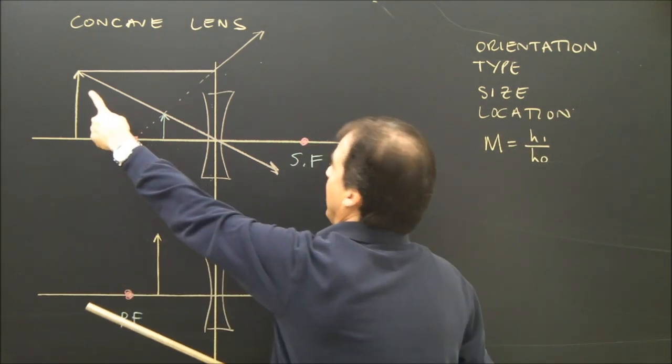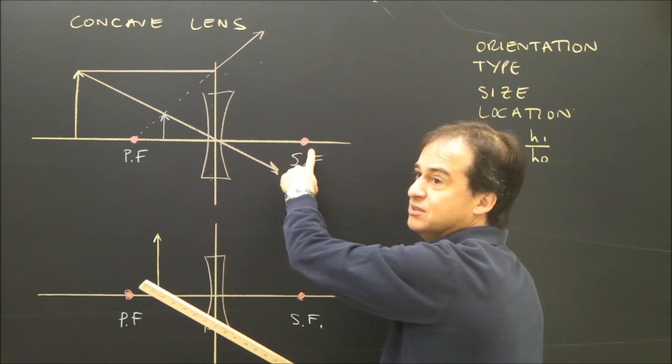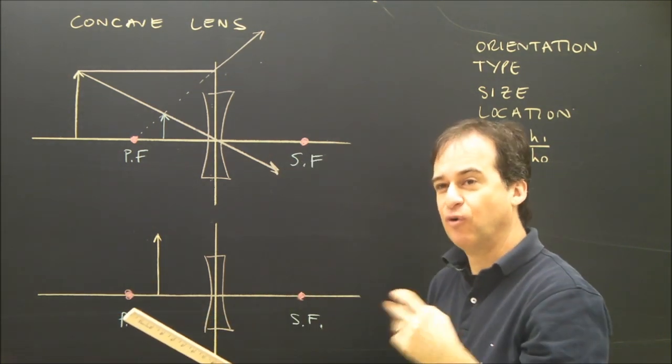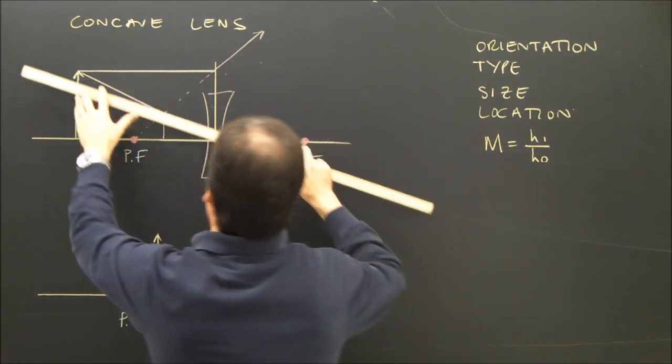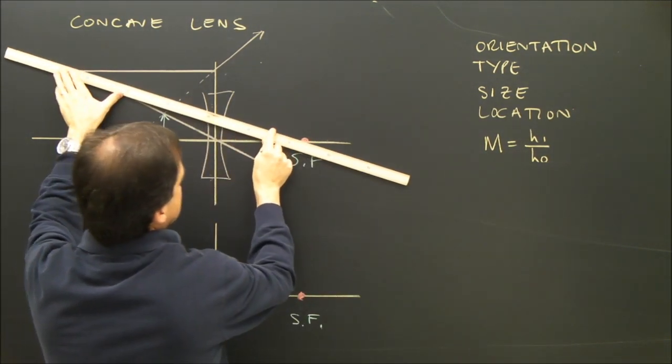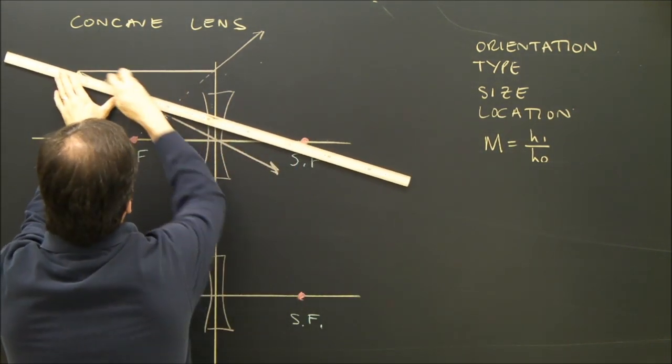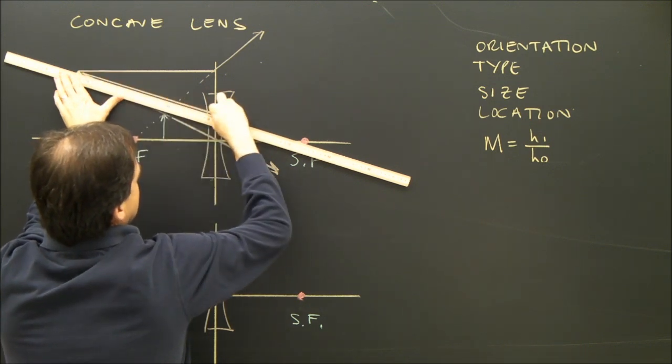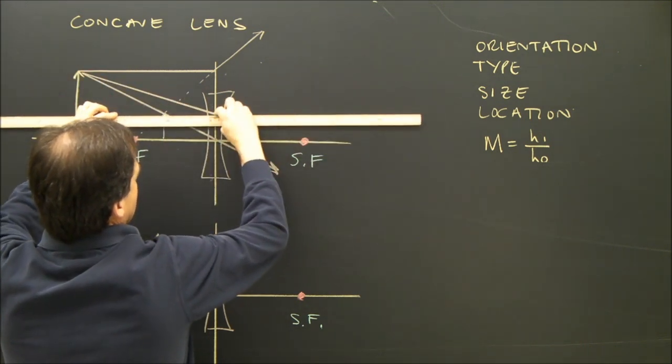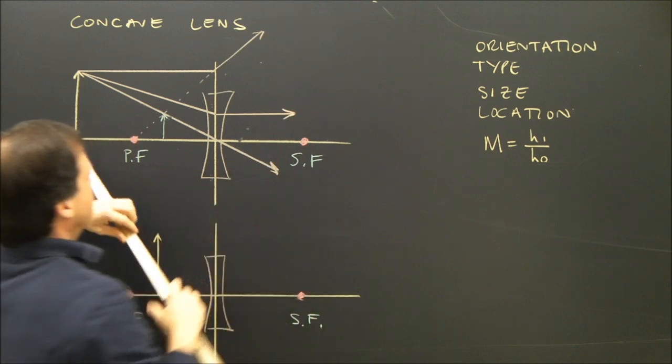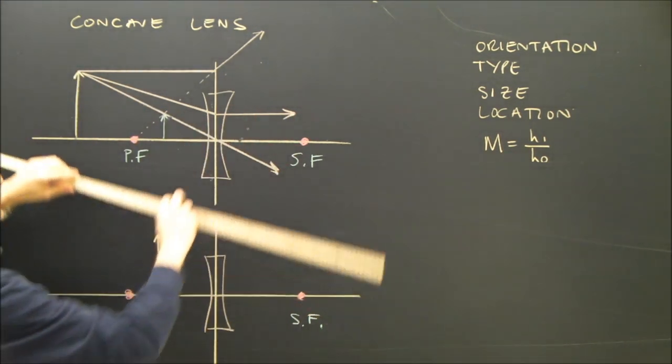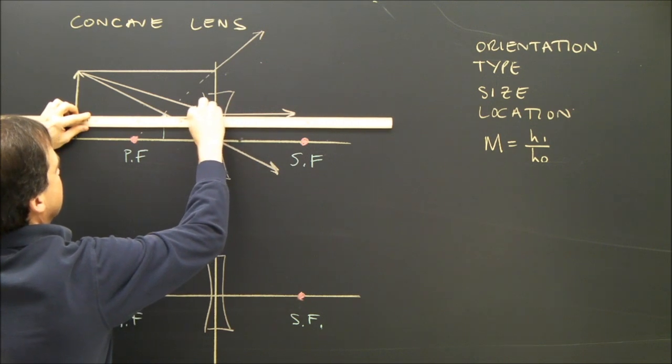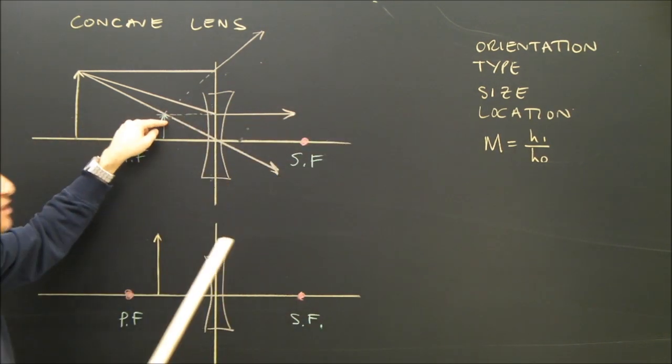So the ray, I'm going to aim it at the secondary focus. And as we said, a focal ray, when it goes through the lens, it becomes parallel. So I'm going to aim it at the secondary focus. When it hits the lens, it's going to go parallel. That ray was aimed at the secondary focus and went parallel. So I traced that back. And no surprise, it meets at the same place.